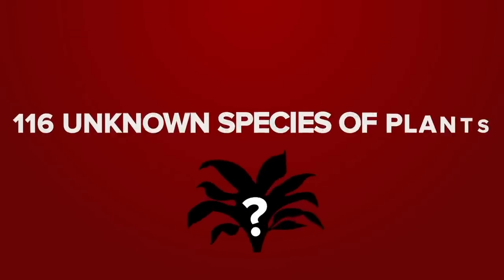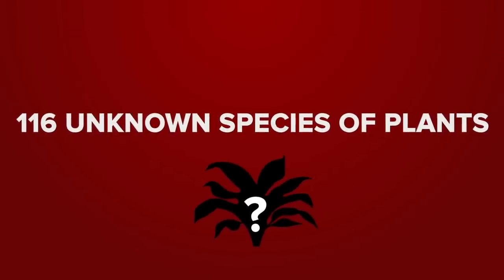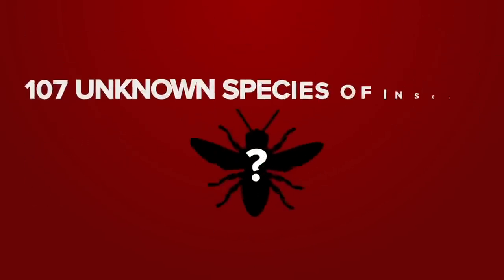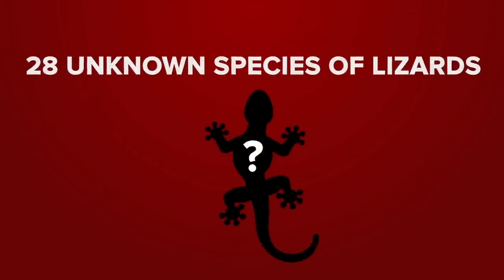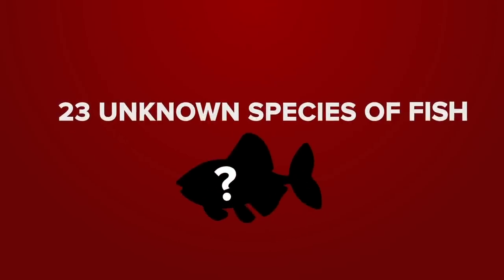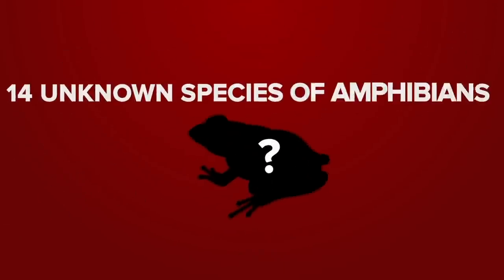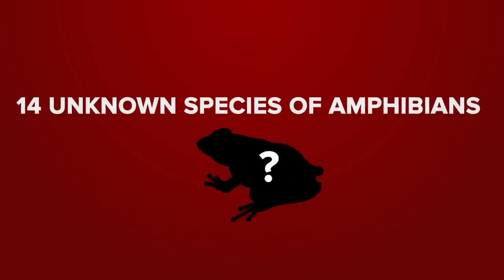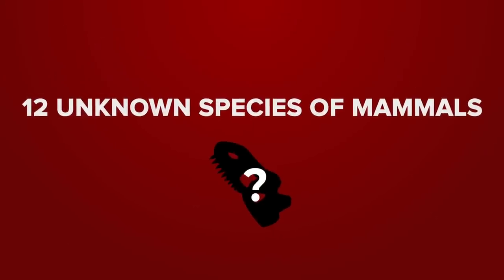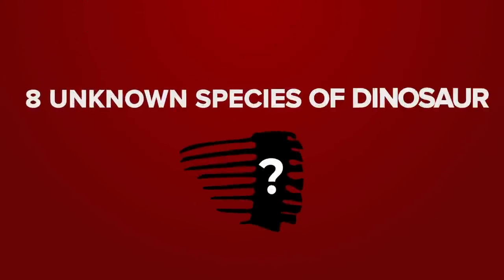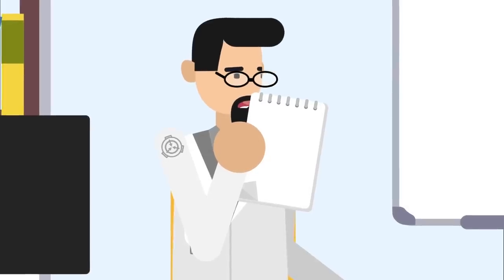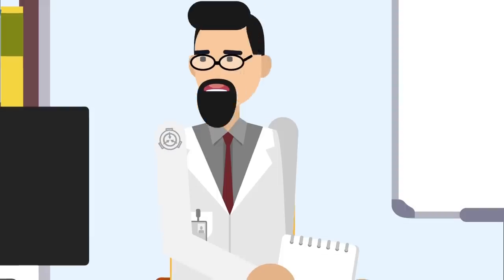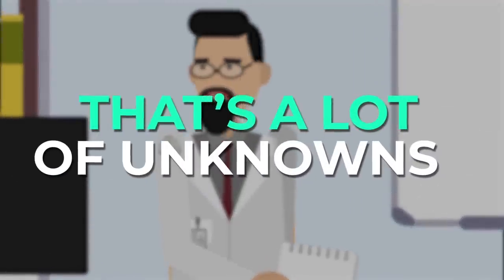The collection included, but was by no means limited to, 116 unknown species of plants, 107 unknown species of insects, 28 unknown species of lizards, 23 unknown species of fish, 14 unknown species of amphibians, 12 unknown species of mammals, fossils pertaining to 8 unknown species of dinosaur, fossils pertaining to 12 unknown species of prehistoric mammal, and artifacts belonging to 29 unknown indigenous societies. That's a lot of unknowns.